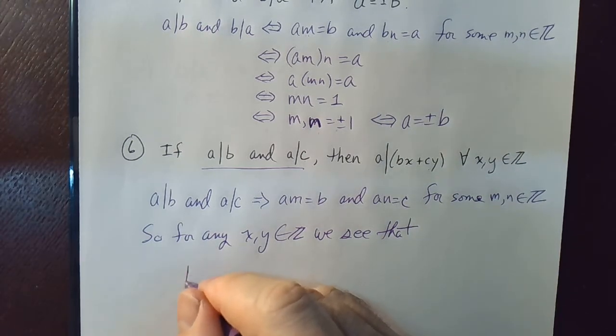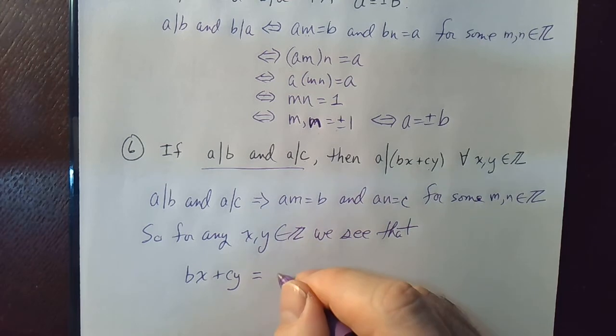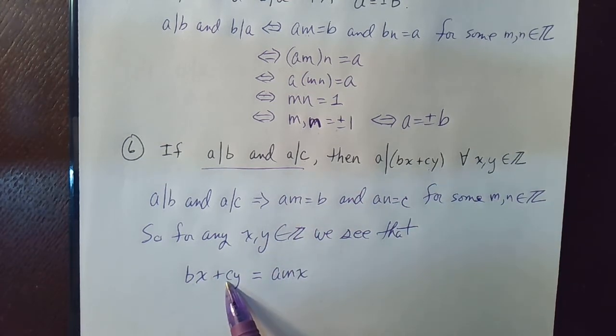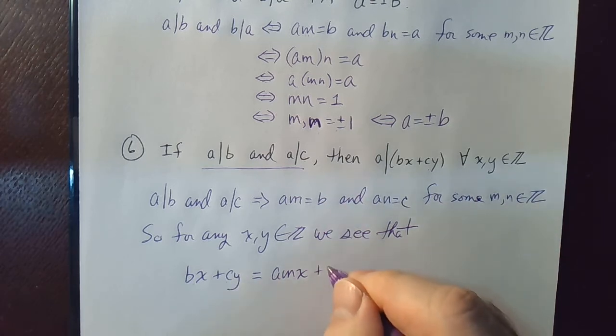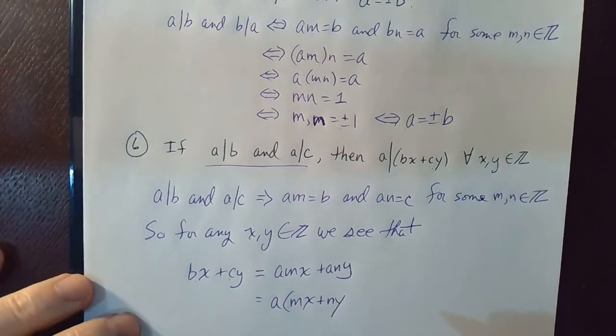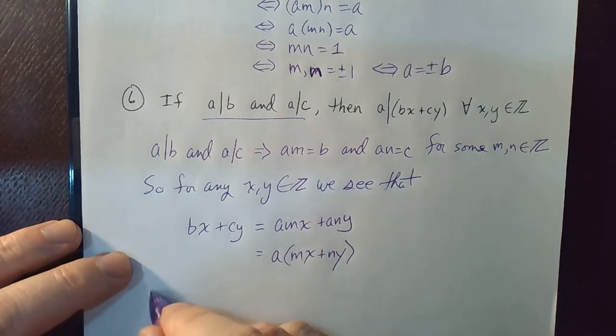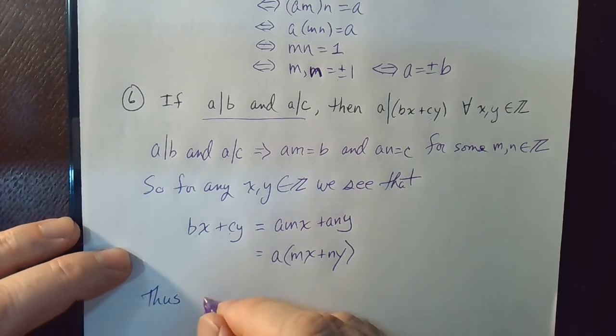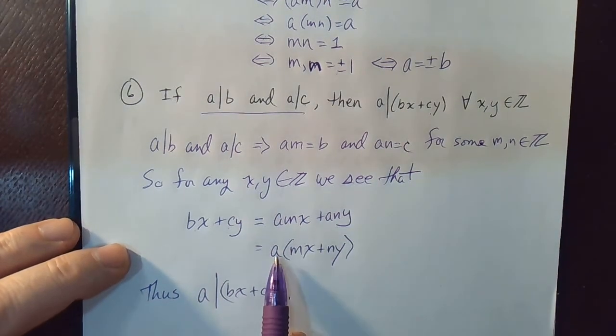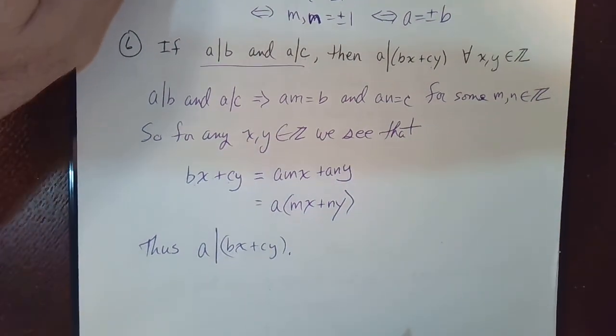All right, so for any X and Y in the set of integers, we see that BX plus CY is equal to, let's see, B is AM, so it'd be AMX, C is AN, so it'd be ANY. All right, and notice they both have an A, so I can factor the A out plus N, and that's exactly what we wanted to show. So that implies that A divides BX plus CY because A times this integer is equal to BX plus CY. So by the definition, A divides BX plus CY.